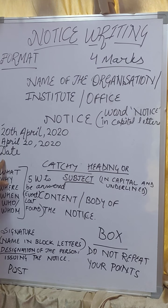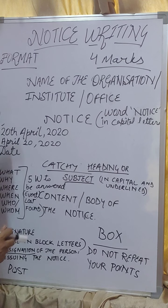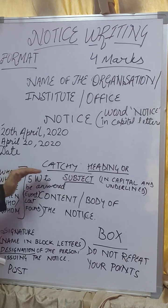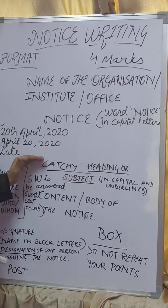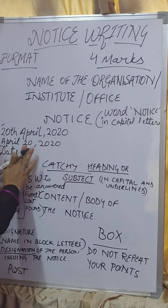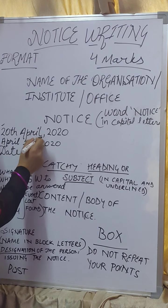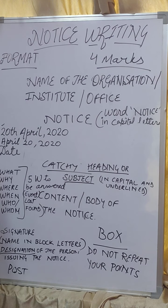Then we write the date. When we write the date, we do not write D-A-T-E. For the format, the date comes on the left-hand side after NOTICE, before the heading. But do not label it as 'DATE' — write it directly, for example: 20th April, 2020.